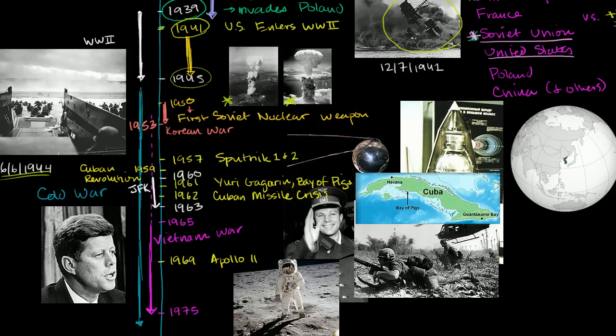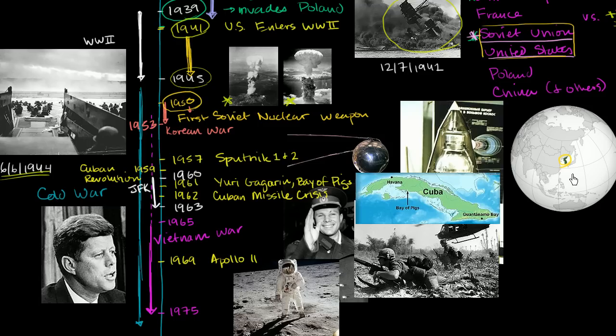The first time this really gets tested is 1950, which is an interesting year. The US had nuclear weapons as of 1945, but in 1950 the Soviet Union tested its first nuclear weapon, making the Cold War very serious — both adversaries could now nuke each other. Also in 1950, you have Korea. Before World War II, Korea was a Japanese colony, but after Japan lost, it was split between North Korea, influenced by the Russians, and South Korea, influenced by the United States, split along the 38th parallel.